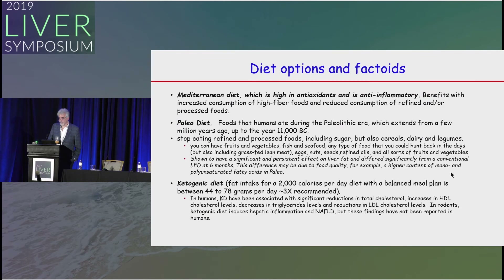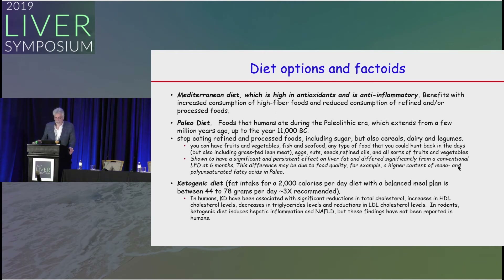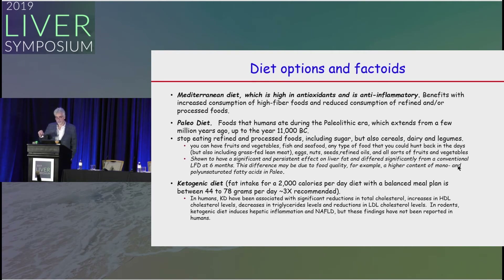The Mediterranean diet has a lot of benefits — high in antioxidants and anti-inflammatory. The paleo diet is a good option, shown to have a significant and persistent effect on liver fat, and is better than conventional low-fat diet at six months, probably because it's more palatable. The ketogenic diet is popular — fat intake for a 2,000-calorie diet is between 45 and 78 grams of fat, about three times what is recommended. In humans, the keto diet paradoxically shows significant reductions in total cholesterol, increases in HDL, decreases in triglycerides and LDL. In rodents, however, the ketogenic diet induces hepatic inflammation and NAFLD, though this has not been studied in humans.